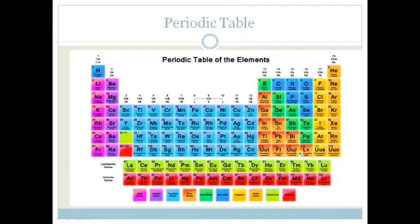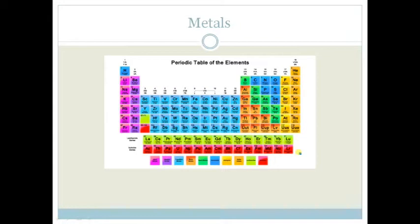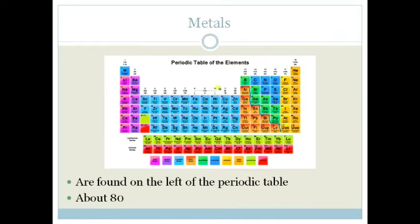Metals are found on the left-hand side of the periodic table. Everything to the left of these steps are metals, and there are approximately 80 metals. The majority of the periodic table is made up of metallic elements.